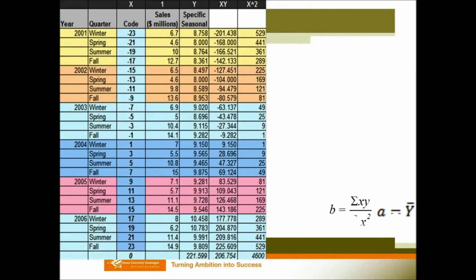Then we use the equation sigma x times y divided by sigma x squared. So, 206.754 divided by 4,600, and then you can get your b. And your y bar, this is the mean of your deseasonalized data, is your a.